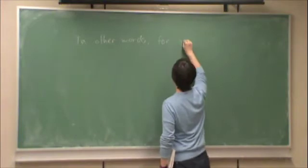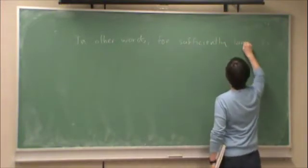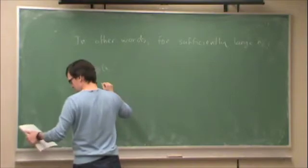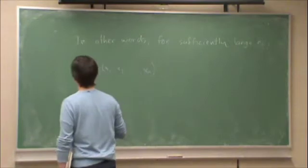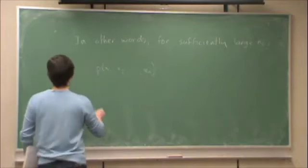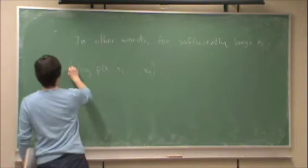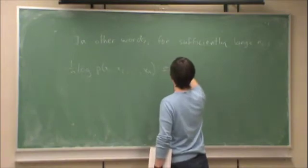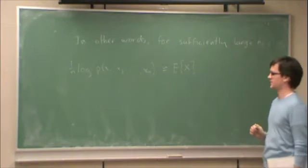for sufficiently large n, the probability of x1, x2, and so on, of the xn. Well, okay, let's start with the actual statement. Negative log, negative 1 over n, log this, is approximately equal to entropy. That's what the weak law of large numbers is telling us.